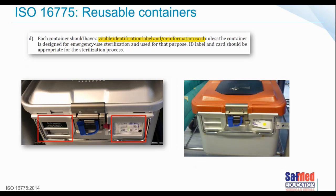Each container should have a visible identification label and information card appropriate for the sterilization process. Using only a chemical indicator in the slot on the outside of the tin is not what is outlined in the standard. You may be missing a huge amount of information that way. You're looking for a process chemical indicator, not just an internal chemical indicator on the outside of the container.